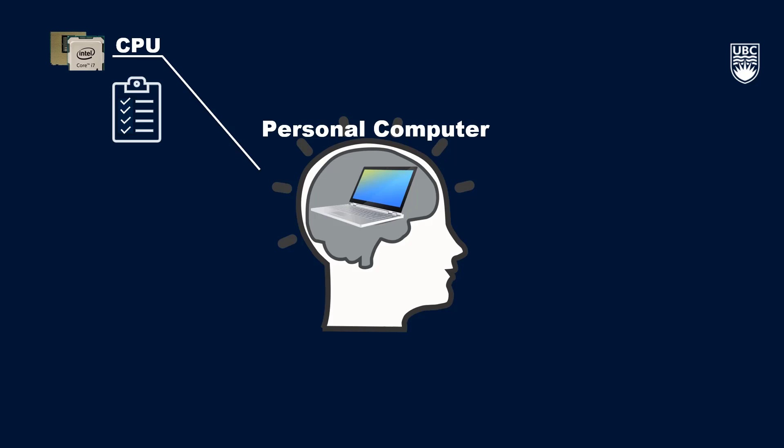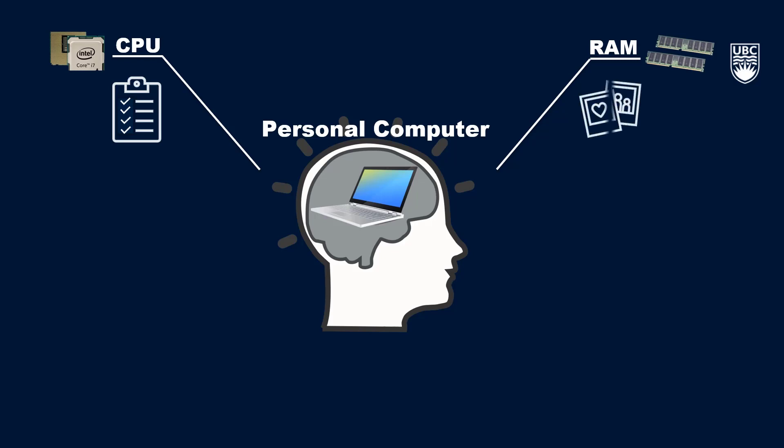Your computer also has a certain amount of memory, known as RAM, which serves a few different functions. It loads and runs programs and allows you to switch between multiple programs. Memory allows for the short-term storage of data so that it can be quickly accessed by your CPU to perform tasks.